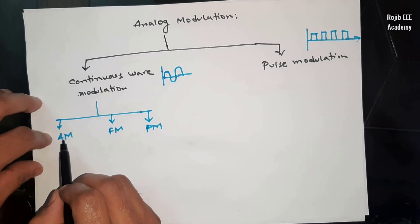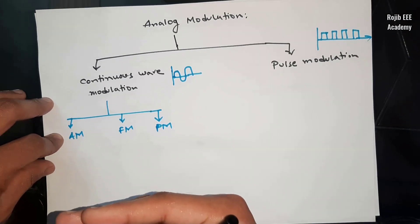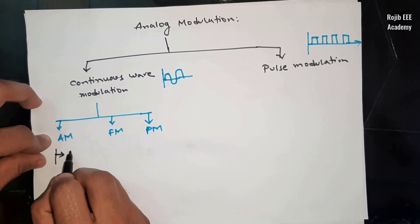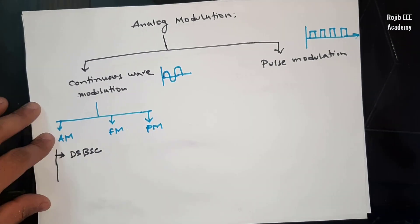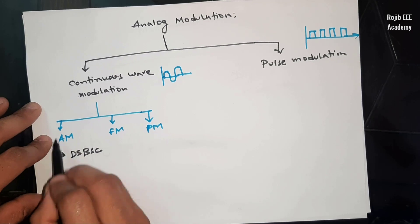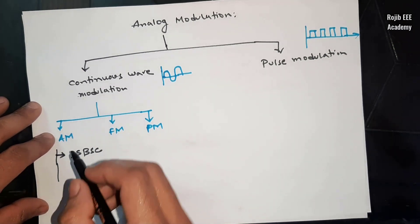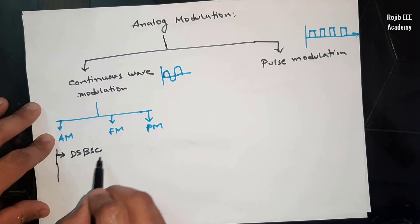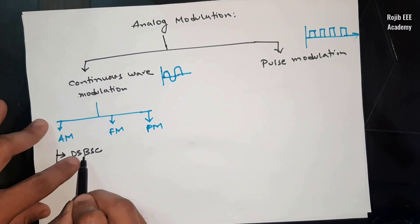Amplitude modulation has a drawback: power loss. The updated version is DSBSC — Double Sideband Suppressed Carrier. DSBSC addresses the power loss issue of standard AM.